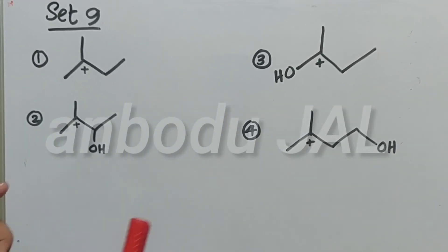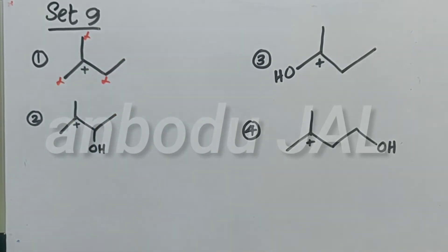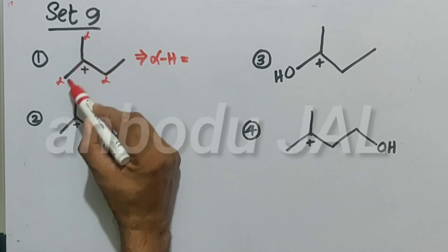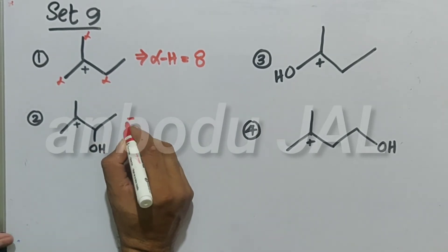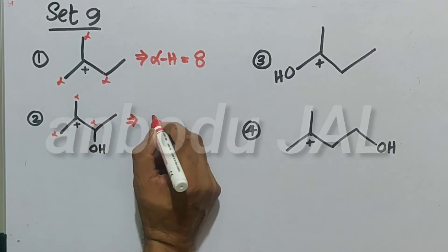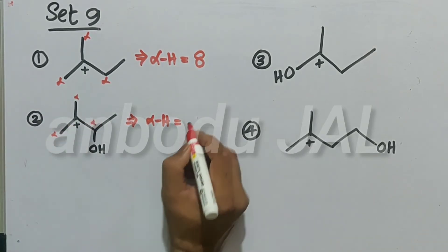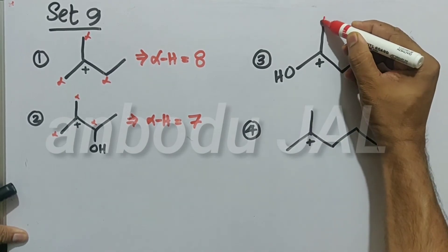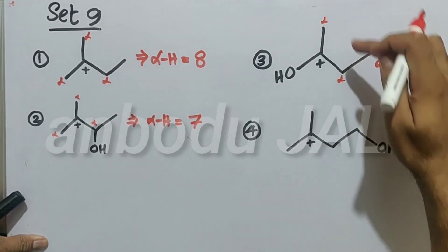In section 9, the given carbocations are analyzed. In the first structure, there are three alpha carbons with alpha hydrogen equal to 3 plus 3 plus 2, giving 8 alpha hydrogen atoms. In the second structure, alpha hydrogen equals 3 plus 3 plus 1, which is 7. In the third structure, the alpha carbons give alpha hydrogen equal to 3 plus 2, that is 5.